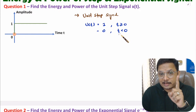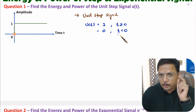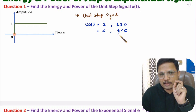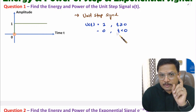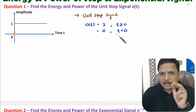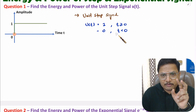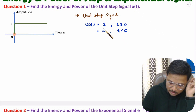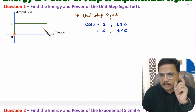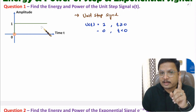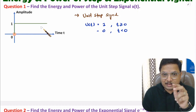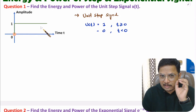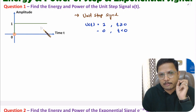Now I will identify energy and power. Before you identify energy and power, you need to understand one thing. If the given signal is a periodic signal, then that will be a power signal. So if a periodic signal is given, we need to identify power of it and energy will be infinite. But if you observe this signal, that is not periodic. So first of all, we need to identify energy. And if energy is zero or infinite, in that situation we need to identify power.